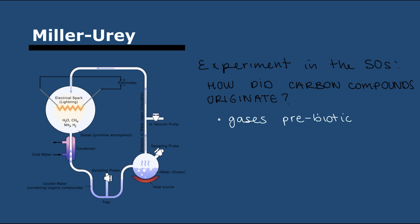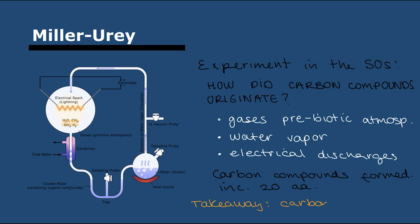They simulated the prebiotic atmosphere with gases from before there was life, water vapor, and electrical sparks to simulate lightning. They let the flask set for a couple of days and realized that carbon compounds did form spontaneously—they saw 20 different amino acids. This shows that it is possible. The takeaway is that carbon compounds can form spontaneously.